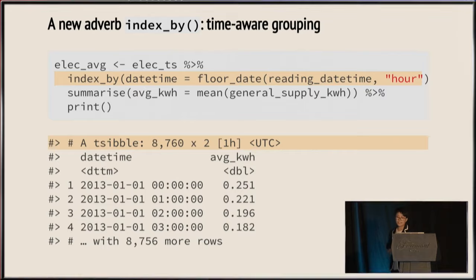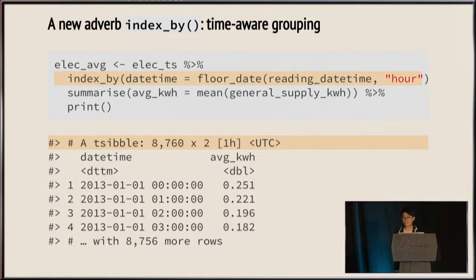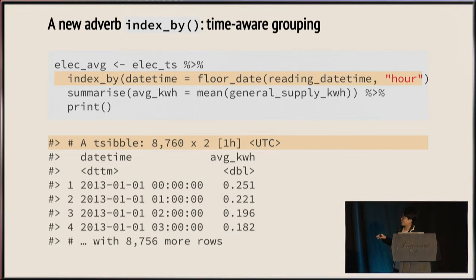Tsibble works nicely with dplyr and tidyr verbs. A new verb you'll use quite often is index_by. It's similar to group_by in preparing a grouping structure, but it only groups the index. Combined with summarize, the data can be aggregated to any higher-level time resolution. For example, to work with hourly data instead of 30 minutes, I use floor_date or ceiling_date from the lubridate package on the index variable inside index_by, followed by summarize. I get hourly average electricity usage across all households — a single time series with one-hour interval.